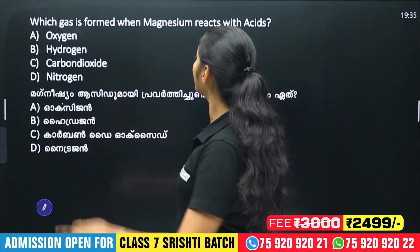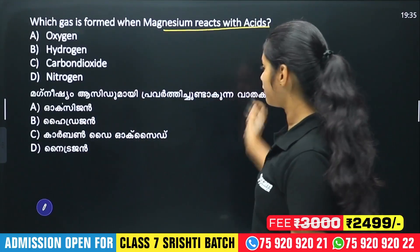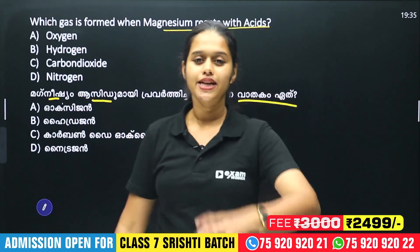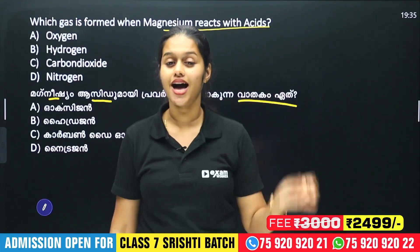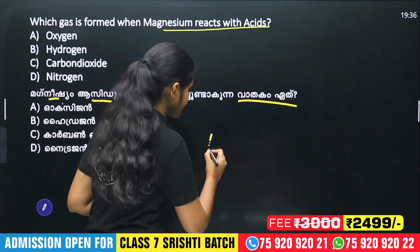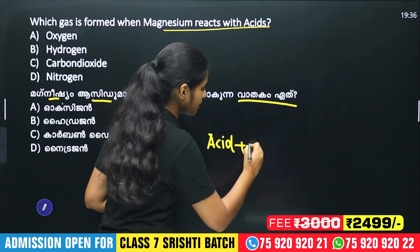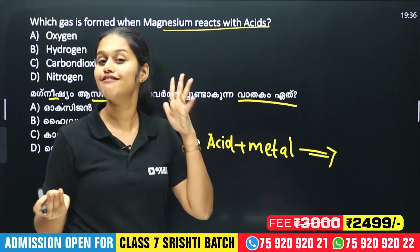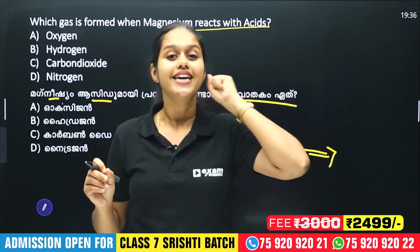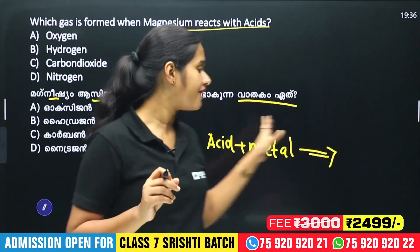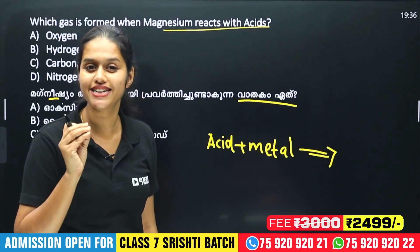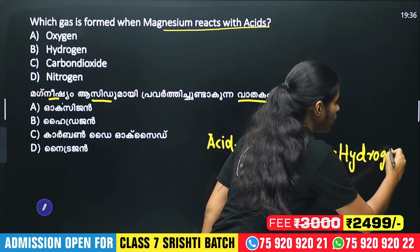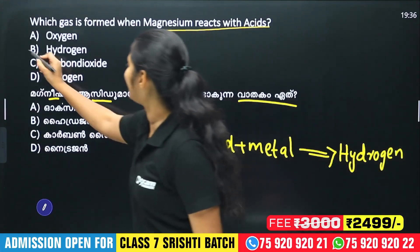Which gas is formed when magnesium reacts with acid? Acid plus metal produces a gas. When we react acid with magnesium metal, hydrogen gas is released. So the answer is Option B — Hydrogen.